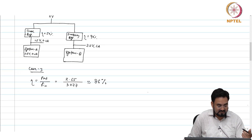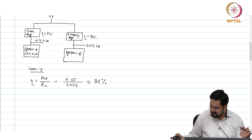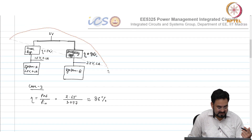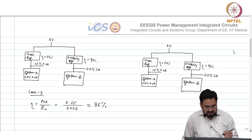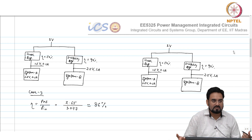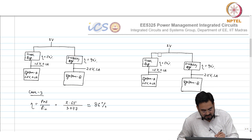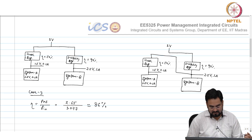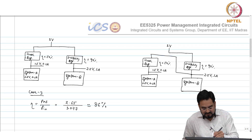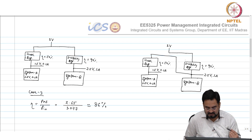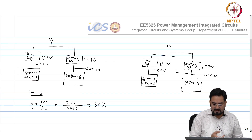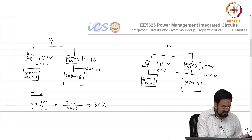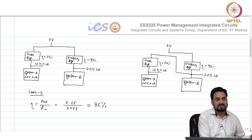Case 4: we can improve efficiency further by reducing the dropout voltage of the linear regulator. Instead of supplying 3V directly to the linear regulator feeding System A, we take the input from the 2.5V output of the switching regulator. Now the dropout voltage is reduced to 1V, so the linear regulator efficiency improves to 1.5V/2.5V = 60 percent.